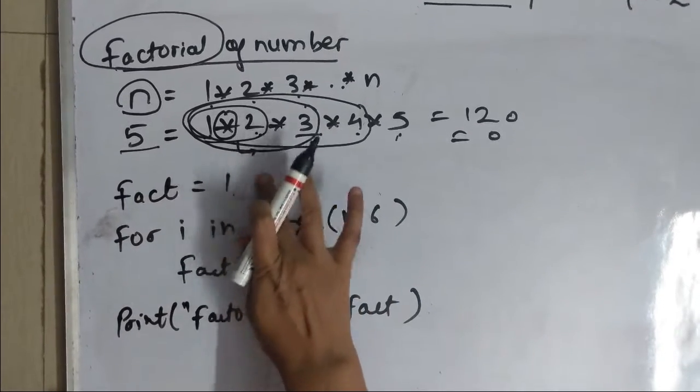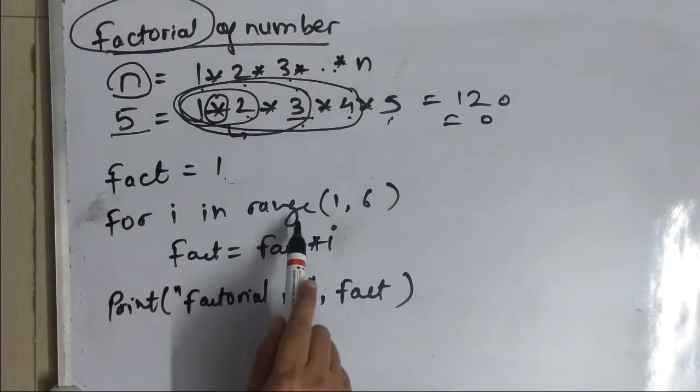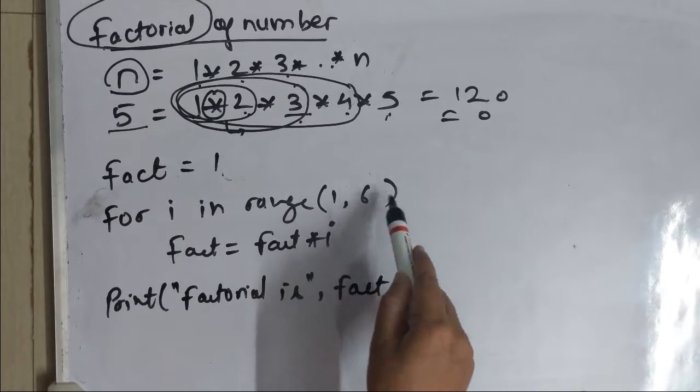We are going to initialize fact with 1 then I have applied a for loop. I have written it in the same way for i in range. In range I will think about what should be the start and end value. Step size is 1 because we are incrementing the numbers by 1 by 1.